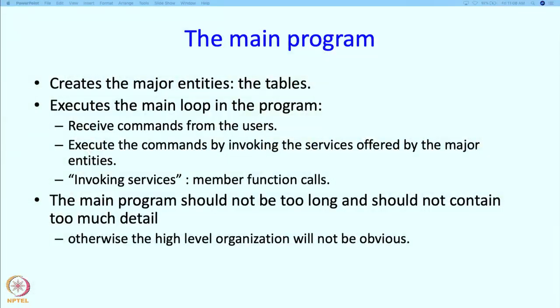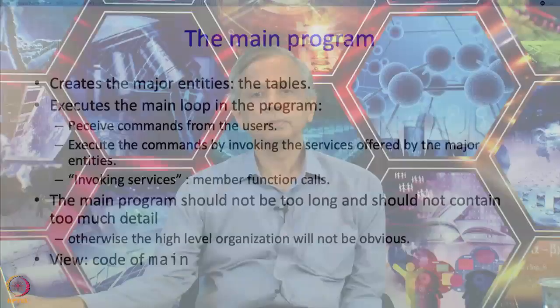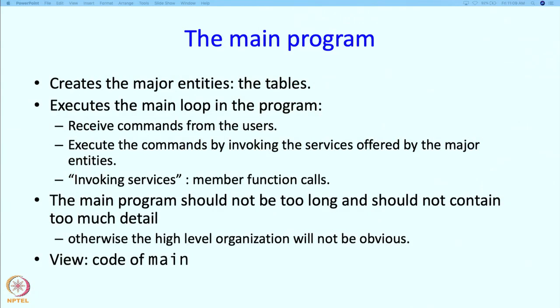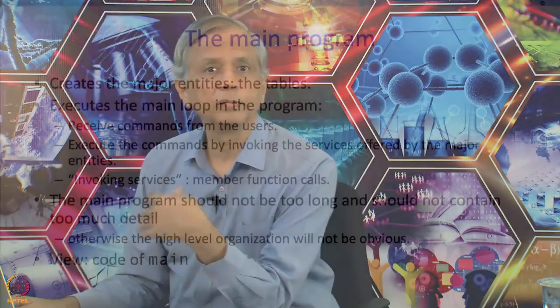Why is this? Well, if we put the details in the main program, then the high level organization will not become obvious. We also want to indicate what the high level organization is, and therefore the main program should sort of spell out the high level organization. From the main program, if you want to know the details about something, you just have to follow up that function call or member function call, and then the body of the member function will tell you exactly how that function is going to be implemented. So next we are going to view the code of main to see how the main program is going to be written to follow these principles.